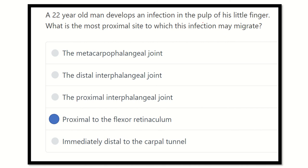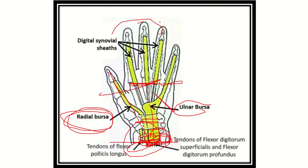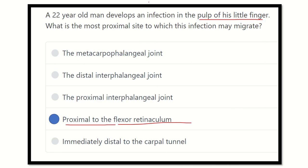So the infection from the pulp of the little finger may travel up to proximal to the flexural retinaculum. That is the answer. Thank you all.